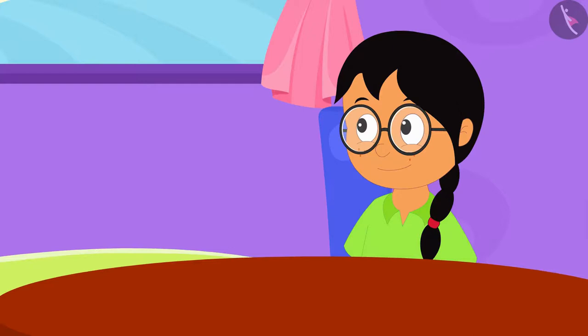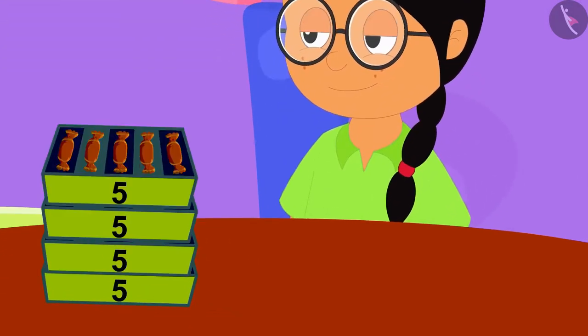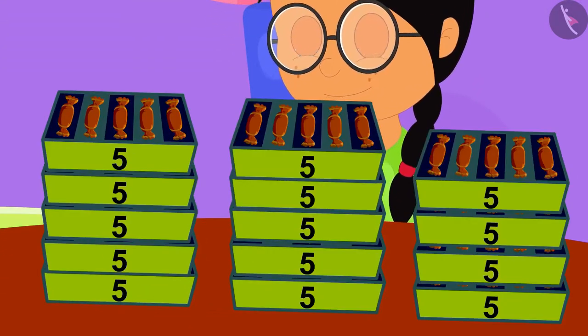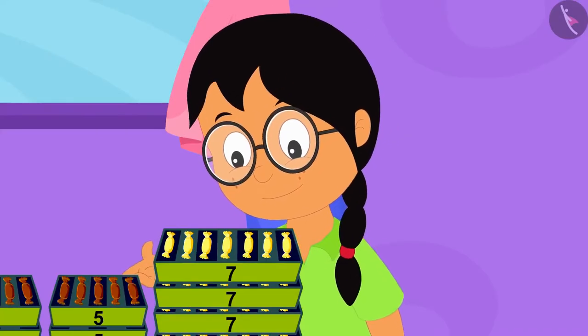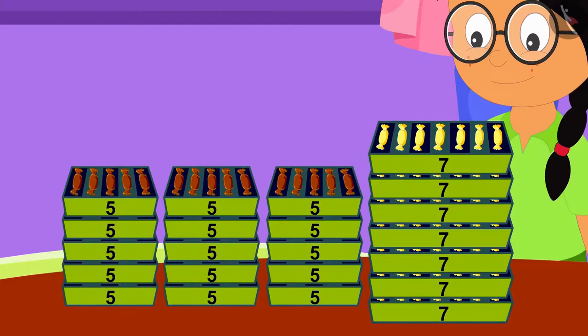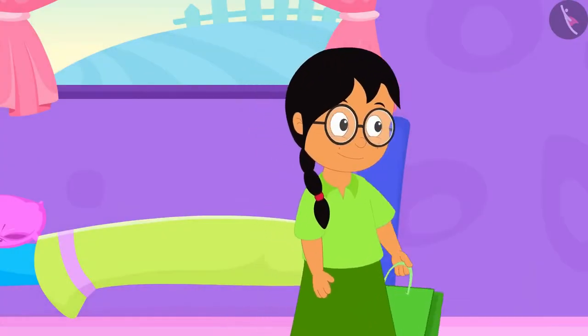With the help of your answer, Meenu made 15 groups of chocolate candies and filled 15 boxes. Meenu finally filled all the candies in the boxes. Now, she is taking these boxes in a big bag to share them among her friends.